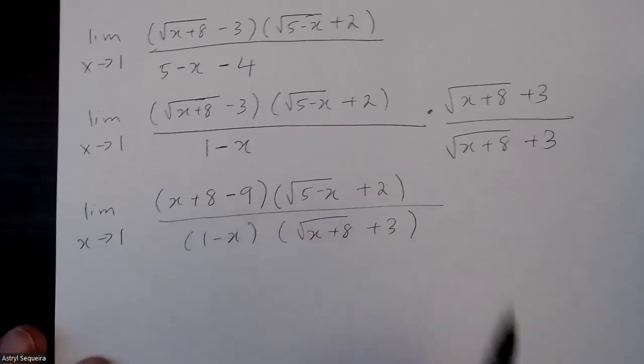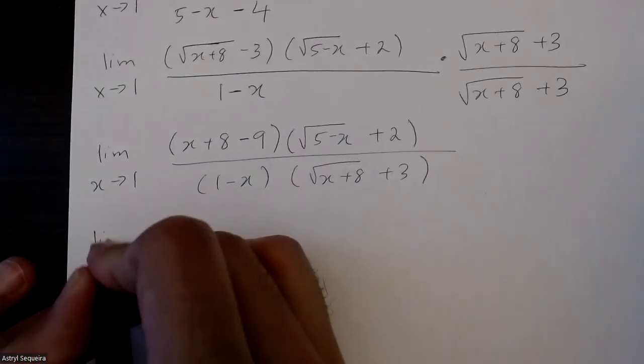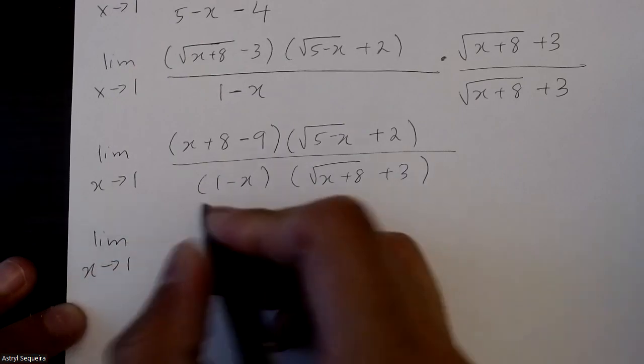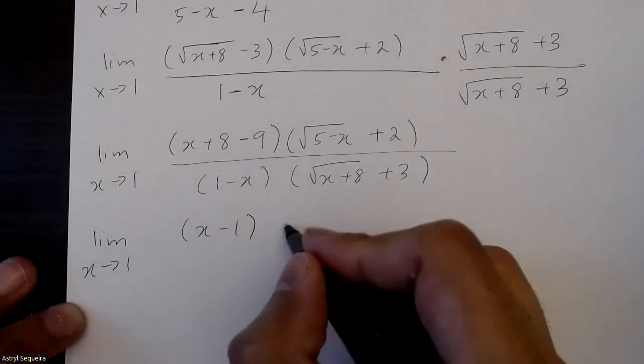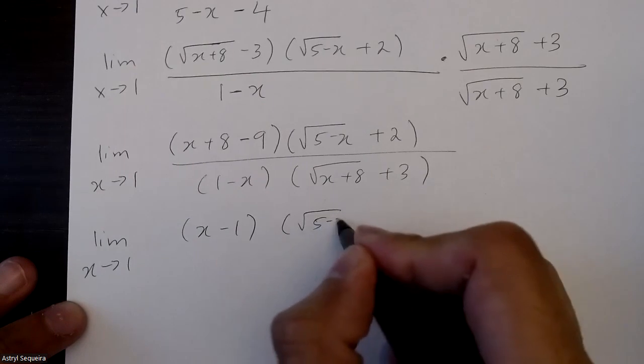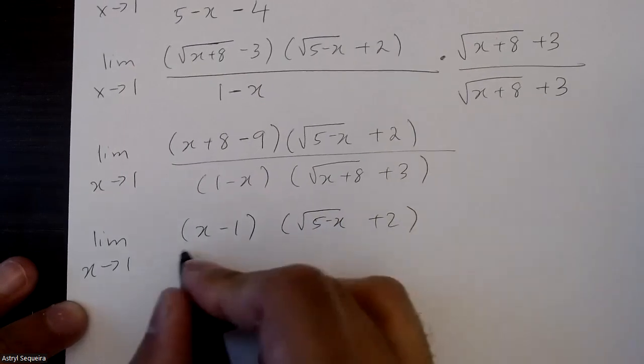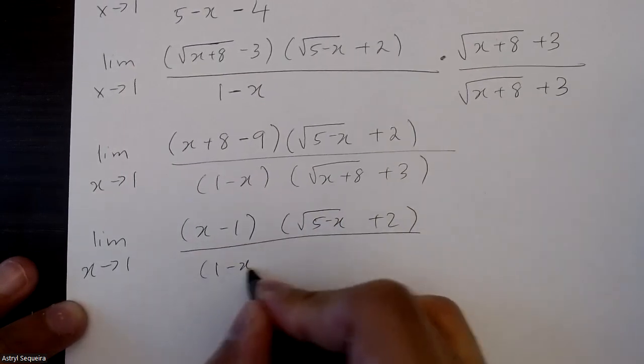So I'm just going to simplify this bracket over here. x minus 1 root 5 minus x plus 2. This one stays the same.